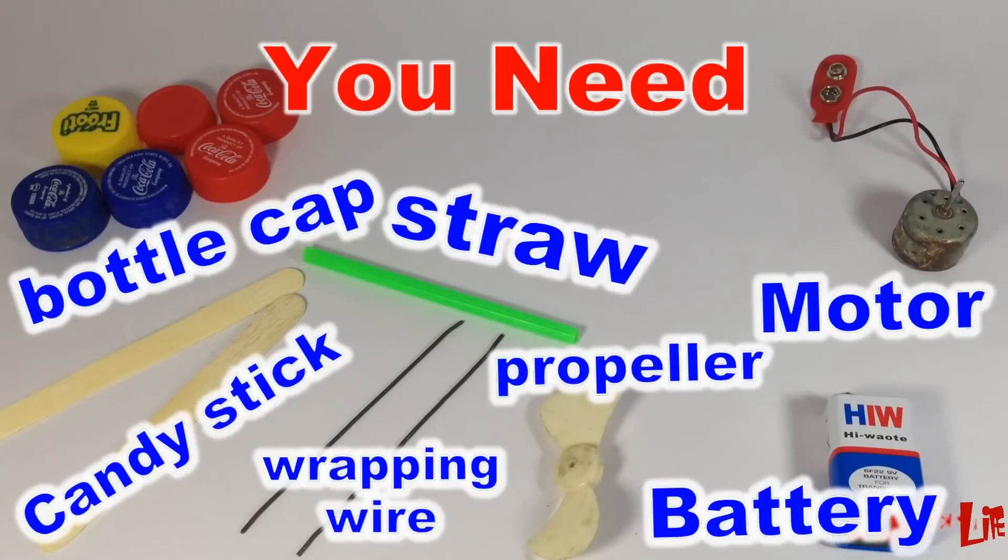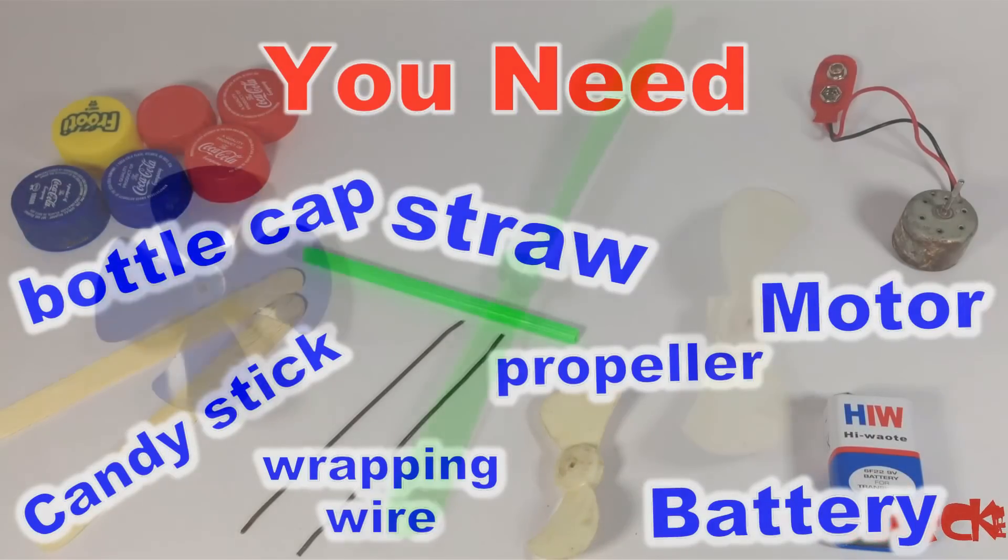For this we need a bottle cap, candy stick, straw, wrapping wire, battery, motor, and a propeller.